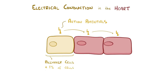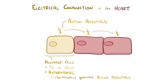Their special ability is that they're auto-rhythmic, which means they're able to continually generate new action potentials that go out to the rest of the heart — the other 99%. This is different from how it works in skeletal muscle cells, which get their action potential signals directly from neurons.